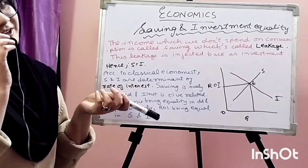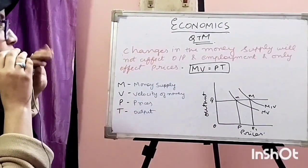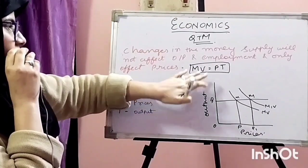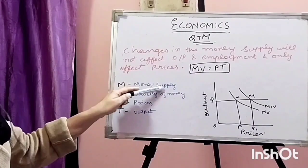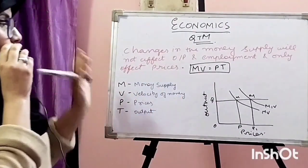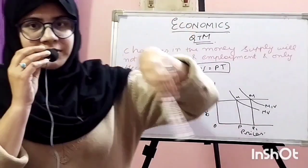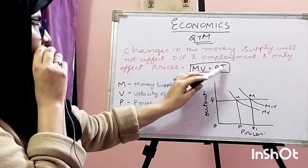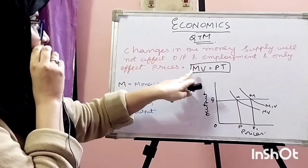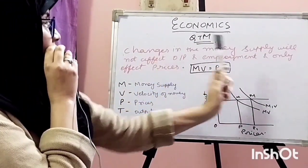The last theory of the classical theory of employment is the Quantity Theory of Money, or QTM. The formula of this theory is MV = PT, where M is money supply, V is velocity of money, T is total transactions or total output, and P is the price level. According to classical economists, V and T — velocity of money and output — are constant. So when money supply changes, it will only affect prices. A change in money supply will not affect output and employment; it will only affect prices.